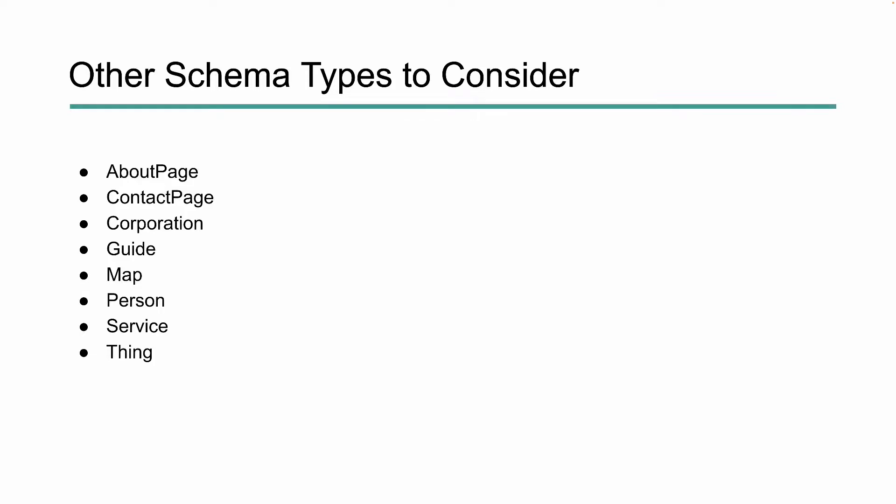These are some of the main schema types that every website owner should look at. Things like about page or contact us page — you can actually set those apart to help search engines understand the purposes of those pages. If you're a larger organization, you can use corporation markup. If you create guide content, you can put that markup on your website. You can mark up your locations, your people, the services you provide, and add entities and annotate your content with thing-type markup.